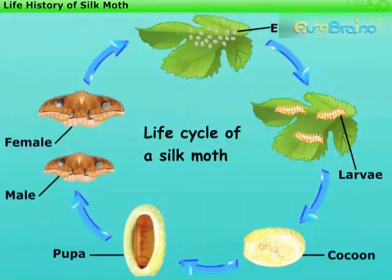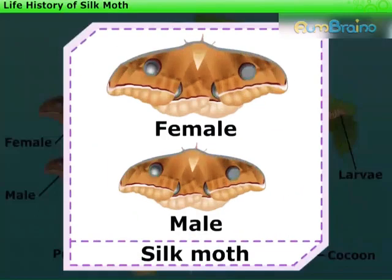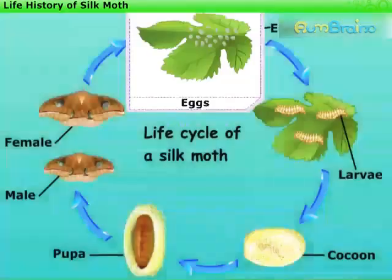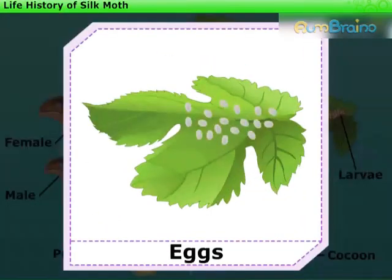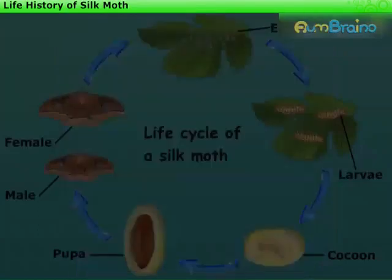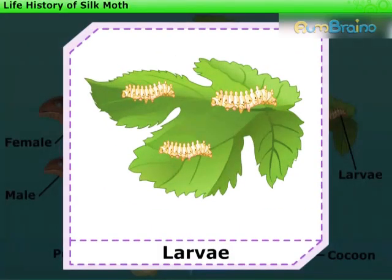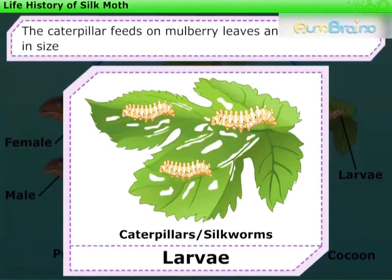Now let us study in detail the life history of a silk moth. The silk moth is classified into male and female. The adult female silk moth lays hundreds of eggs, out of which tiny larvae hatch. These larvae are also known as caterpillars or silkworms. The caterpillar feeds on mulberry leaves and starts growing in size.